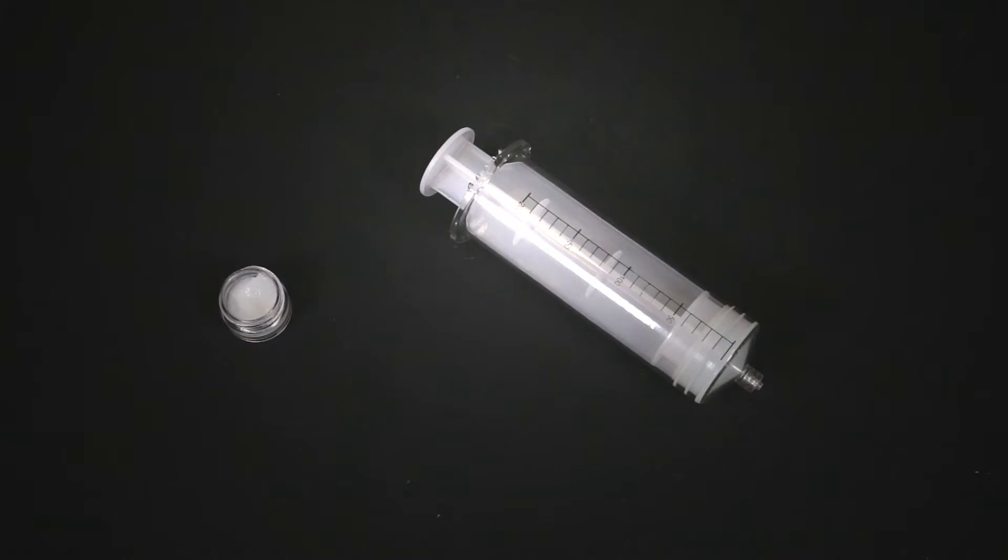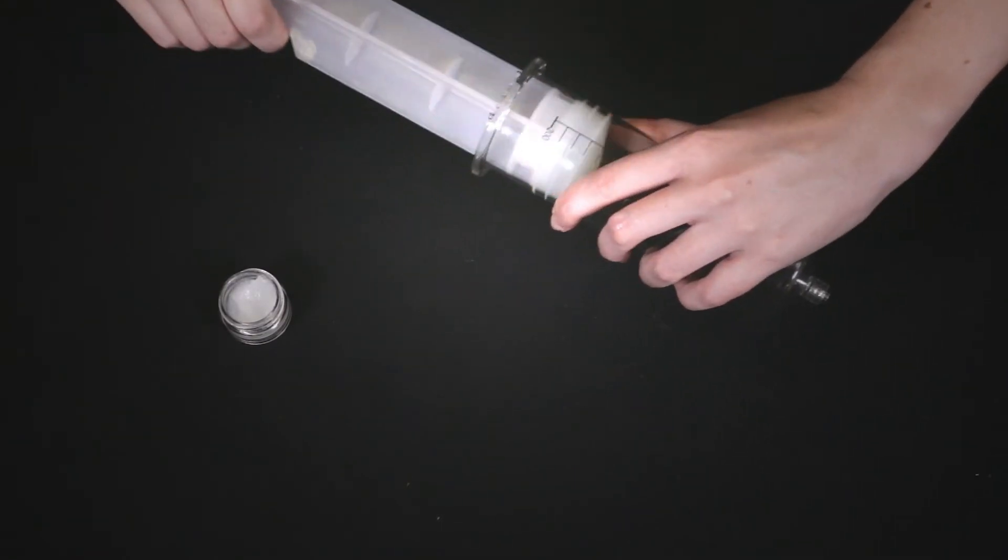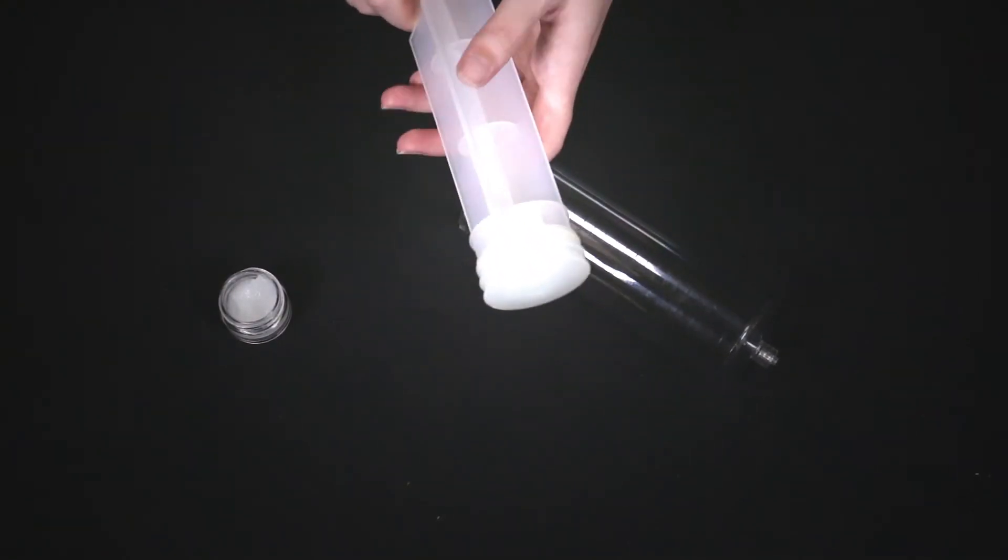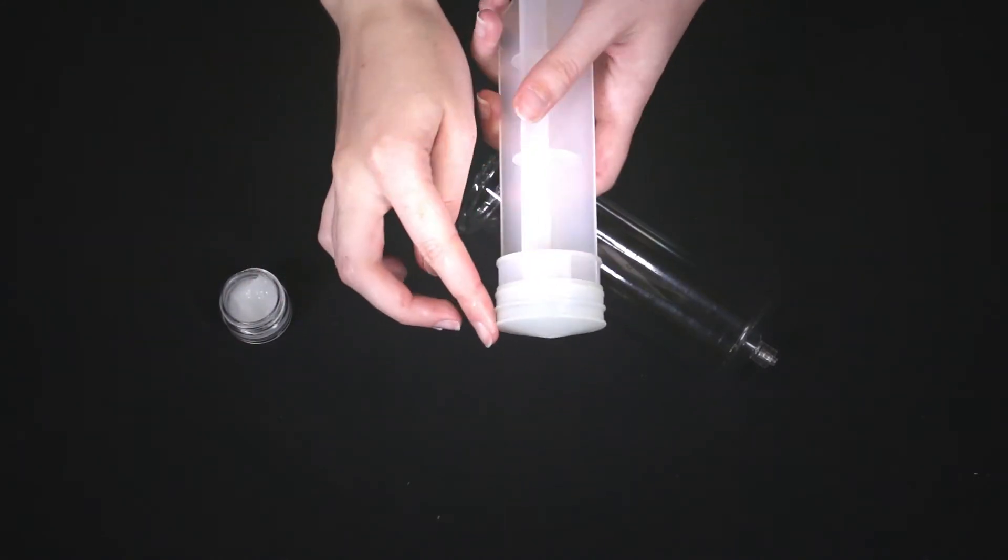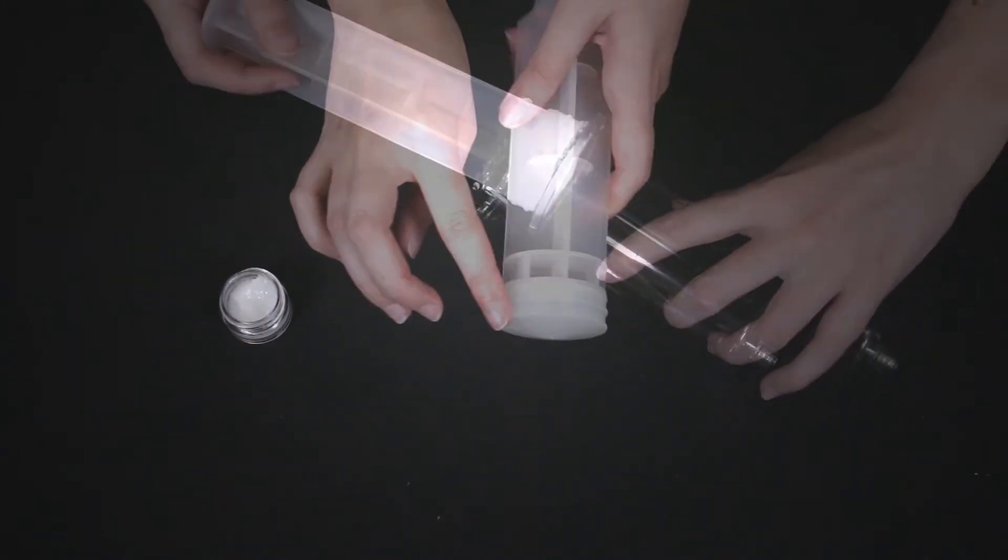To lubricate, all you have to do is take the plunger out of the syringe housing and take a little oil and apply it to the head of the plunger. This should be sufficient lubrication for about three uses and your syringe should now be easy to move.